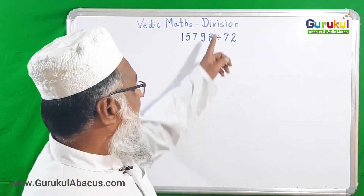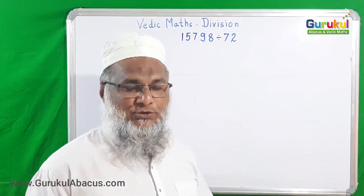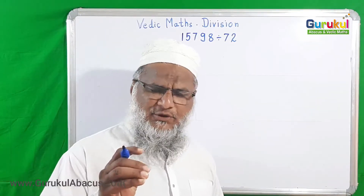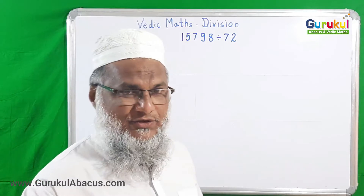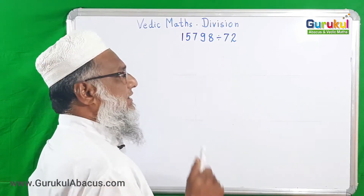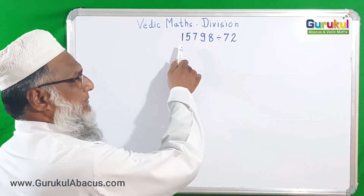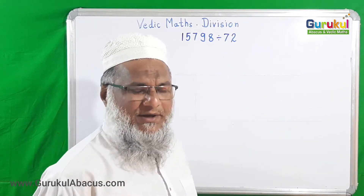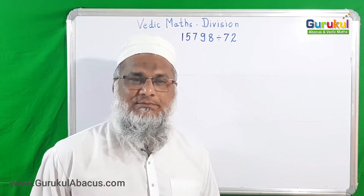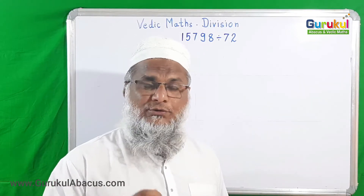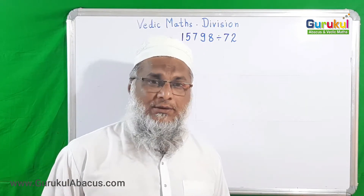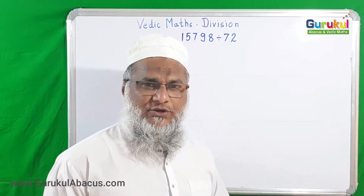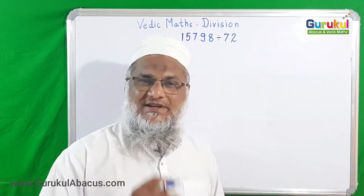Now we will learn division in Vedic mathematics. You will be very happy to understand that solving a division example is very simple. Just one example we have taken here: 15,798 divided by 72. By the traditional method, solving this division may require a minimum of 2 to 2.5 minutes or more, but by our Vedic method we can solve it in just 20 to 25 seconds.